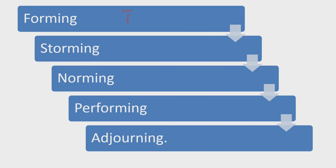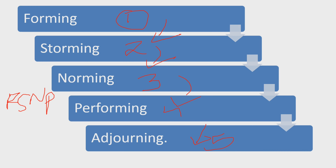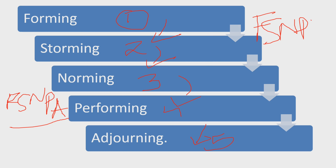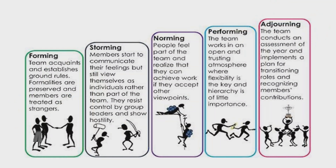The first stage is called Forming, which leads to the second stage, Storming, which leads to Norming — stage three — then Performing — stage four — and finally Adjourning — stage five. You can make a mnemonic to learn these stages: F for Forming, S for Storming, N for Norming, P for Performing, and A for Adjourning. Remember the acronym: FSNPA.